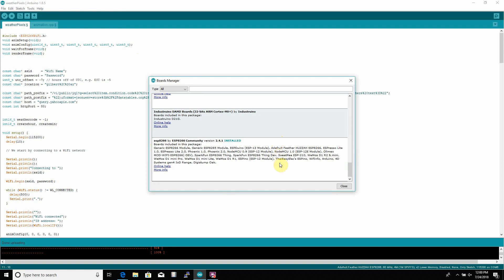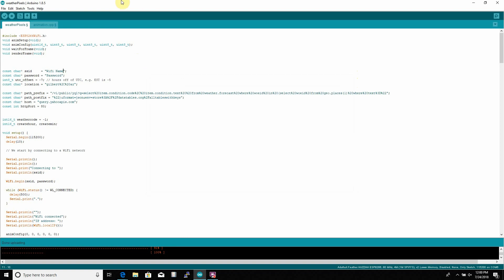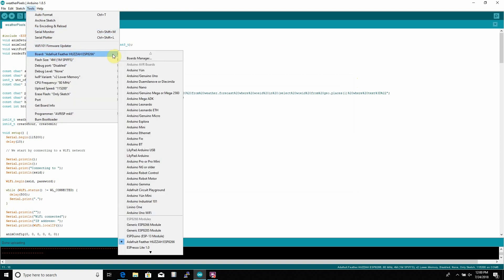And once you install that, that setup's done. You go to Tools, Board, and make sure you select the Adafruit Feather Huzzah ESP8266, since that's the board that we'll be using for this project.